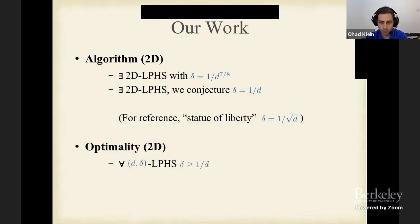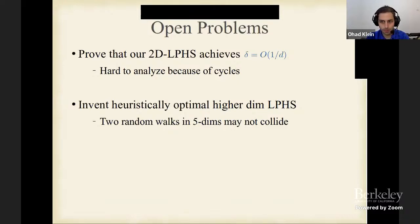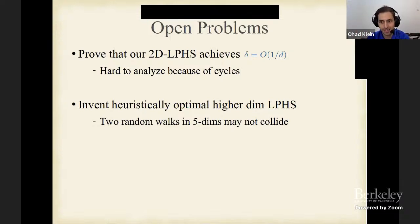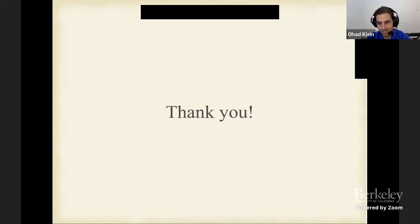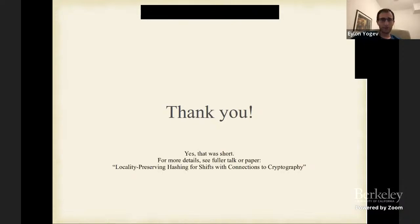In the paper we show both a good construction and a conjectured optimal construction, with a proof of optimality of the conjectured optimal. Open problems include proving our two-dimensional LPHS construction is optimal, and constructing nearly optimal LPHS for higher dimensions — related to the fact that random walks in five or more dimensions are unlikely to collide.